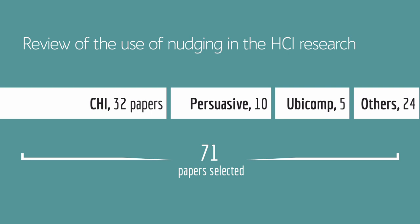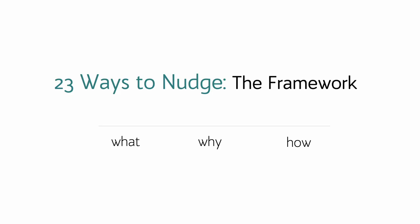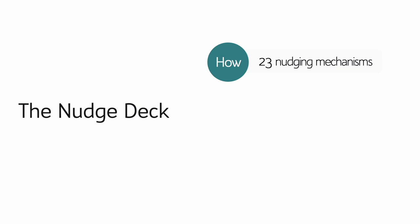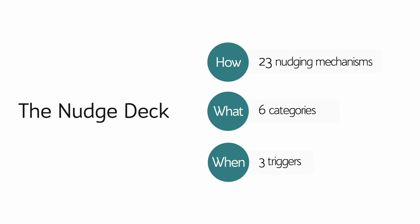The framework was derived from a systematic review of the use of nudging in ACI. We analyzed 71 papers, which allowed us to identify 23 mechanisms of nudging. The current version of the NudgeTech consists of 23 nudging mechanisms, which are clustered in 6 categories and linked to 3 triggers, making a total of 32 double-sided cards.